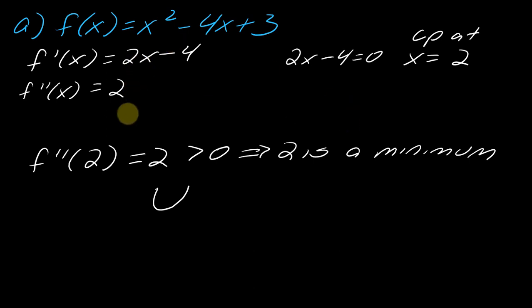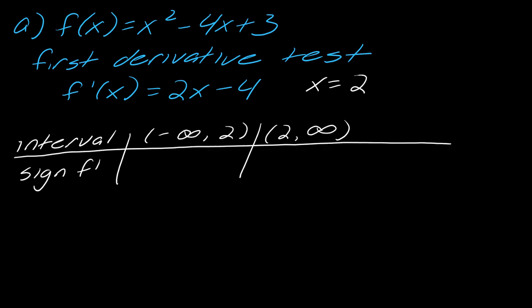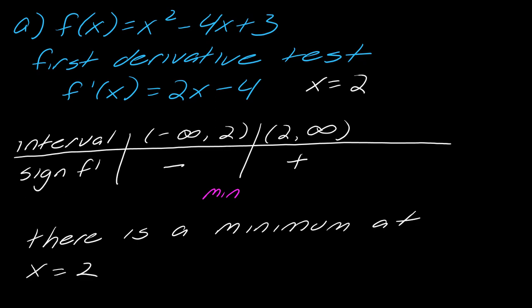Now I want to compare this to the first derivative test. Using the same first derivative with critical point x equals 2, I set up the sign table. Without showing all the work — covered in other videos — the sign of f prime is negative to the left of 2 and positive to the right. This means the function goes from decreasing to increasing, confirming a minimum at x equals 2.